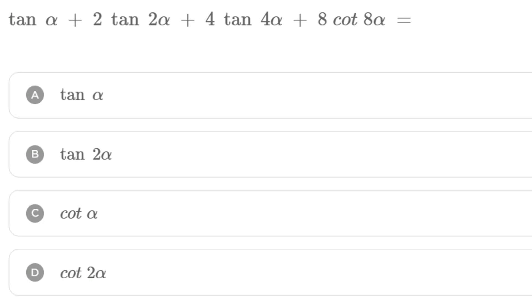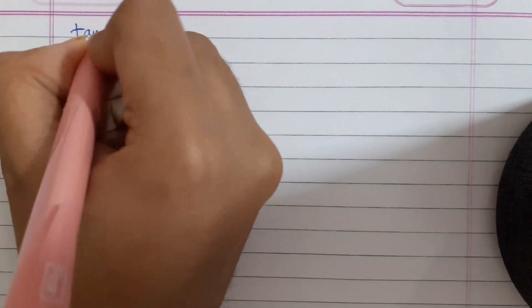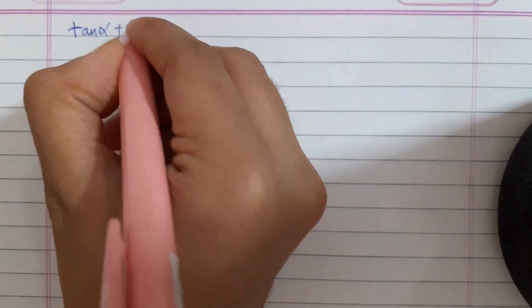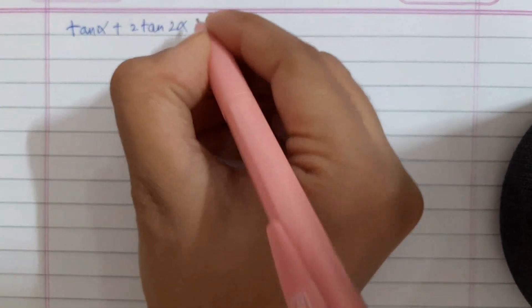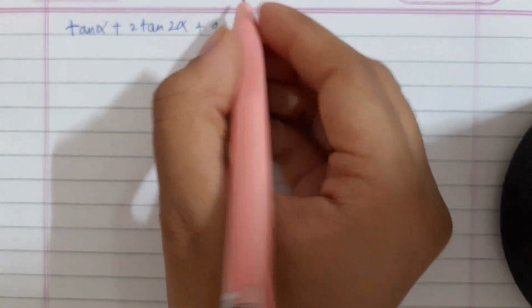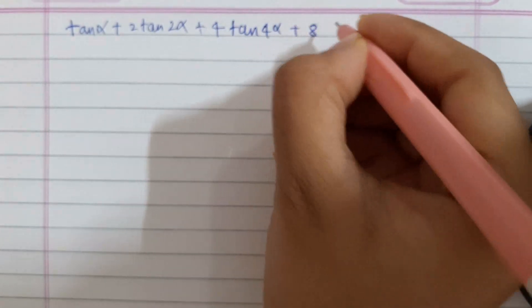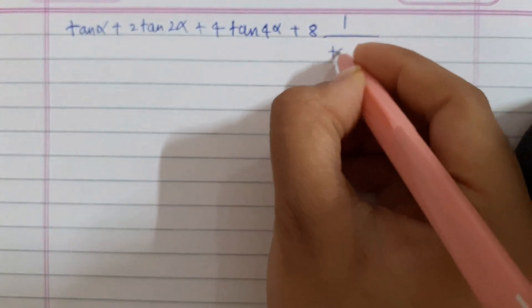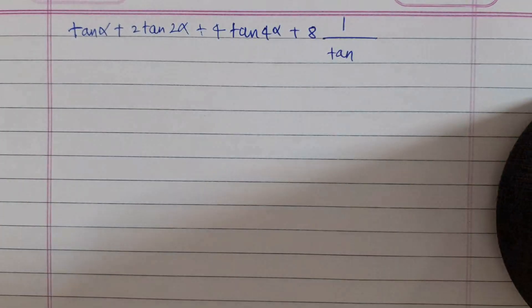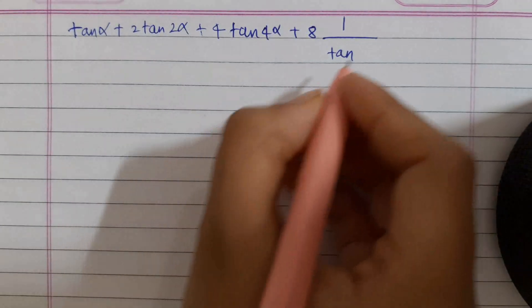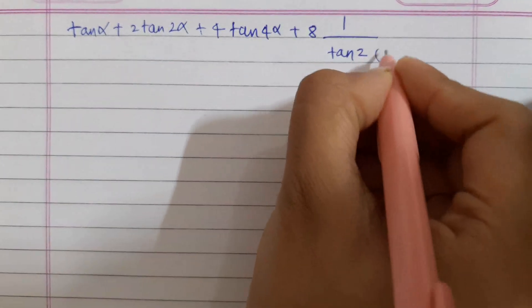We will start the question by simplifying the last term, writing cot 8α as 1/tan 8α. We will consider α as 4α, and write it as 2tan 4α.